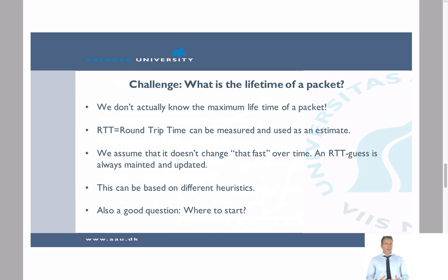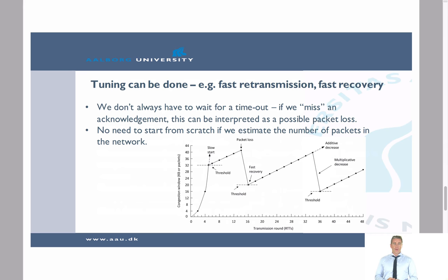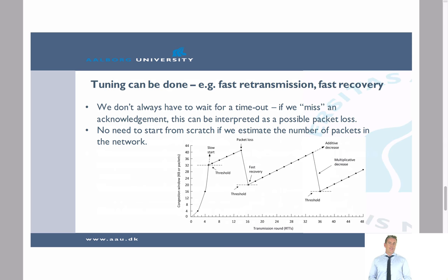There is a lot of tuning that can be done with TCP slow start. We don't always have to wait for a timeout — on unstable connections with high round trip time variance, we can detect a missing acknowledgement. For example, if we send packets 1, 2, and 3 but receive acknowledgements only for 1 and 3, we can infer packet 2 is lost and retransmit it. Mild over-retransmission is an acceptable trade-off for faster recovery.